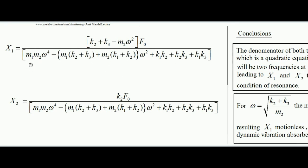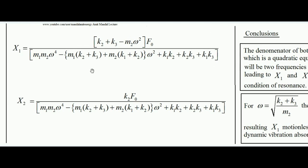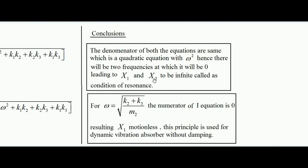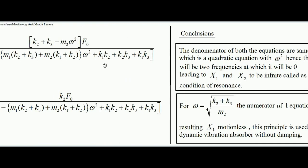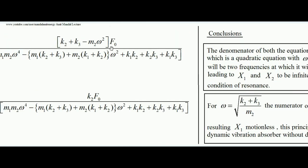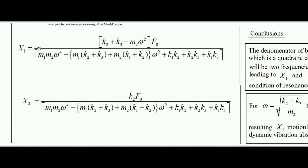The denominator is quadratic in ω²: treating ω² as the variable x, it has the form a·x² + b·x + c. Setting it to zero gives two values of ω. At those two frequencies, the denominator becomes zero, making X1 and X2 theoretically infinite — this is the condition of resonance. So there are two resonant frequencies in a two-degree-of-freedom system with harmonic excitation.